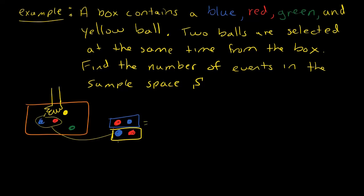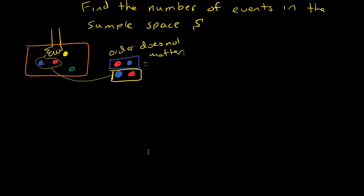Sampling without replacement where you select one and then another is a permutation. Here, order does not matter — red-blue and blue-red are both the same event. A tree diagram is actually pretty difficult to draw for a combination, because you're not selecting in two separate steps.